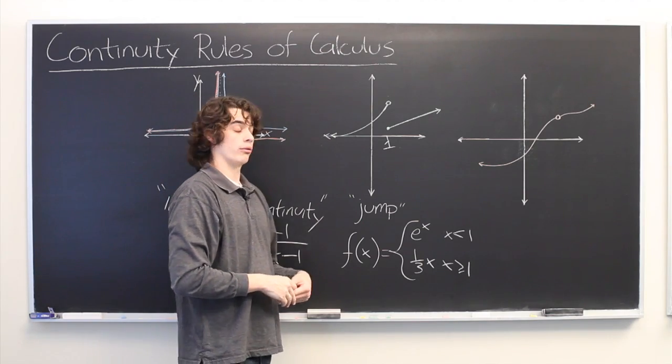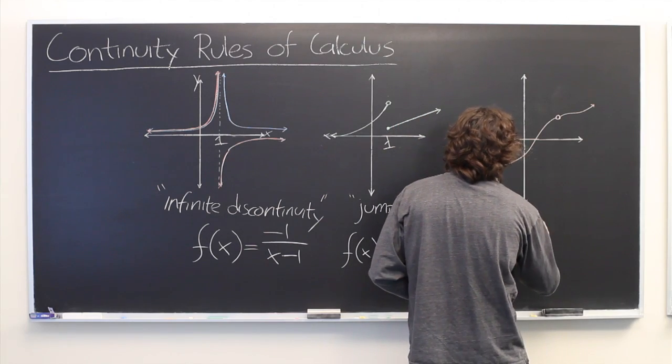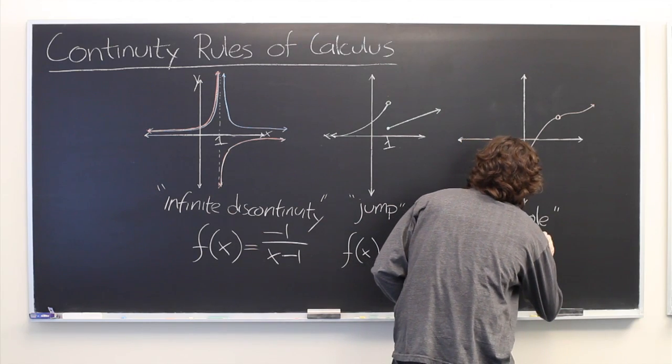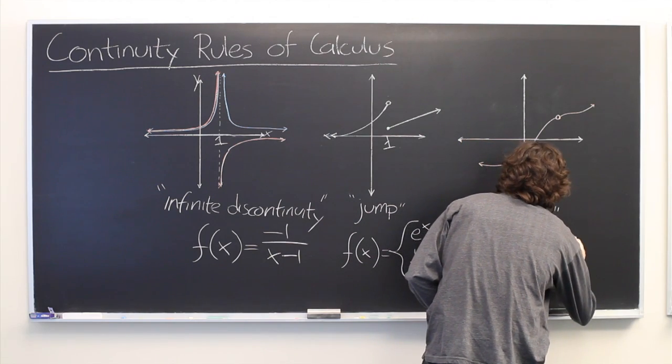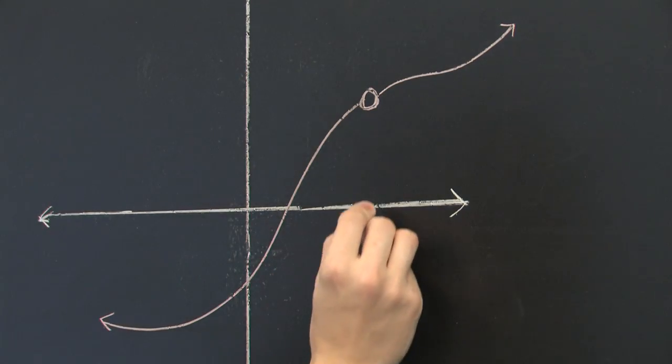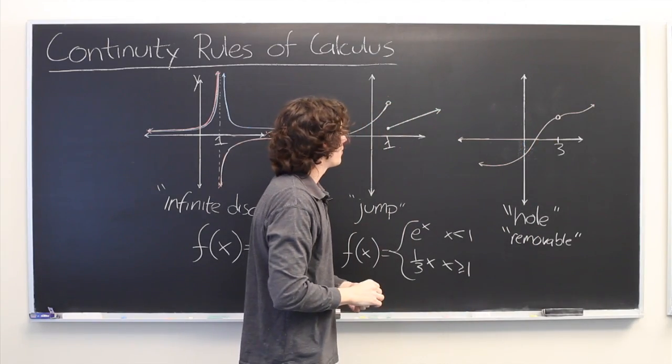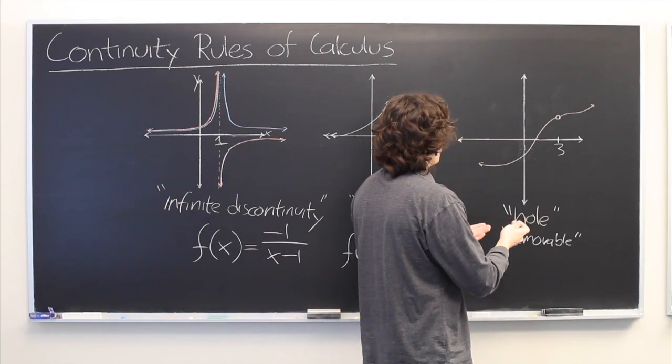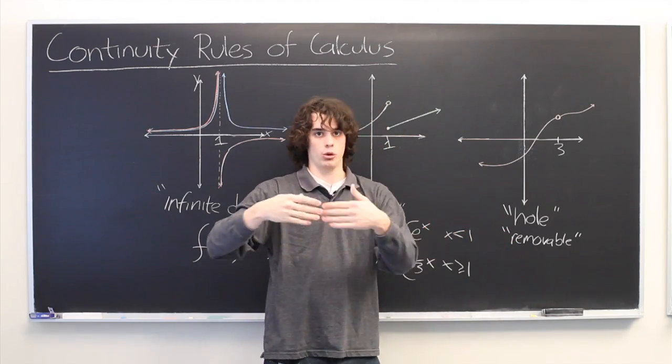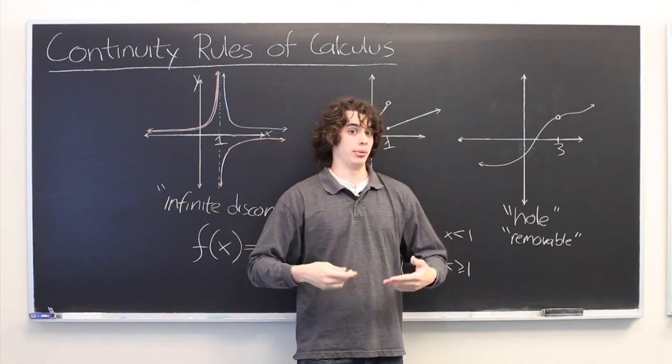So the third and final form of discontinuity has a couple of different names. Sometimes called a hole or a removable discontinuity. So here we have some curve, and then at the point, say x equals 3, there is simply a hole where the function is not defined. Now, sometimes this can be constructed arbitrarily by just saying, all right, this function is defined as f of x equals some function of x for all of the domain except at x equals 3, and it's simply not defined there.